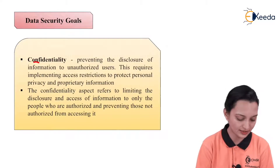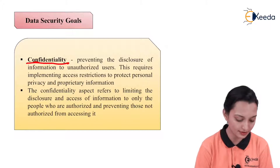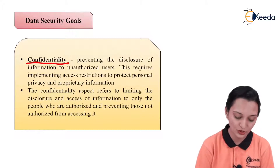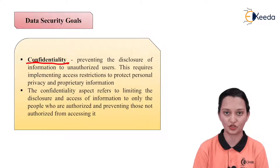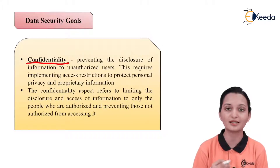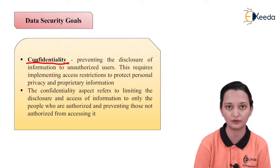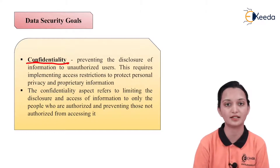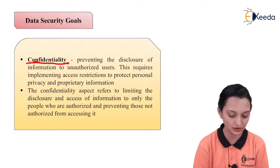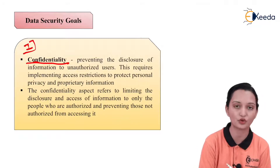The first one is confidentiality. It is used in preventing the disclosure of information to unauthorized users. This requires implementing access restrictions to protect personal privacy and priority information. Confidentiality means we require to make our data safe — preventing the disclosure of data by unauthorized users, that means the third party. Whenever a third party tries to observe, listen, or modify the data in between the sender and receiver, then the first aim of data security — confidentiality — arises.